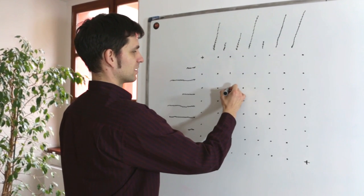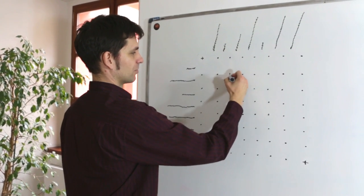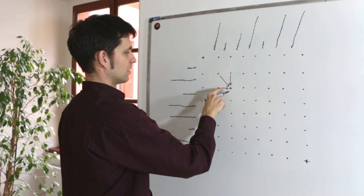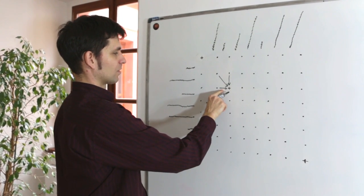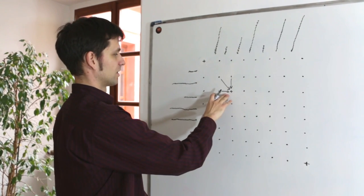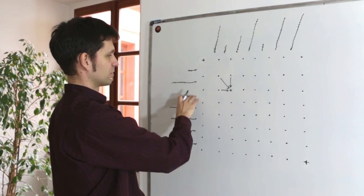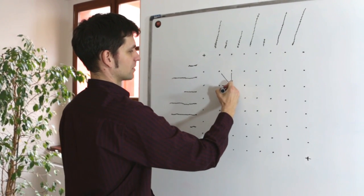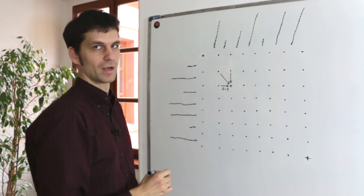In the string edit distance algorithms there are three allowed operations. This arrow corresponds to the insertion of a character and in our case it would be an insertion of the sentence. So there was no sentence traversed on the source side but there was one sentence produced on the target side. A zero to one alignment.